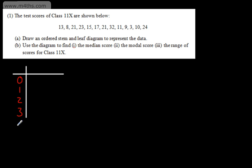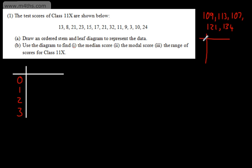I don't have to introduce number 4, as we've got no scores in the 40s. For example, if my scores were 109, 113, 107, 121, and 134, we would again use tens — so 10, 11, 12, and 13 — where each row represents 100 to 109, 110 to 119, 120 to 129, and 130 to 139.